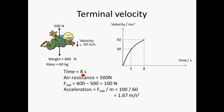Moving further down to 8 seconds, the velocity has reached 50 m/s and the air resistance has increased to around 500 newtons. The resultant force is 600 minus 500, which gives 100 newtons, and the acceleration is 1.67 m/s². Plotting the graph at 8 seconds, the velocity is now 50. You can see the increase in velocity is lower than the initial increase, because the initial acceleration was greater while the second is much lower.